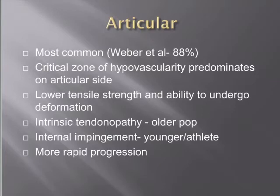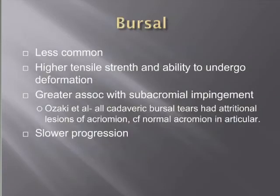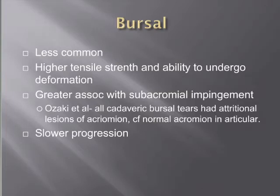Articular-sided tears are related to intrinsic tendinopathy — hypovascularity and age-related degeneration — but are also seen in the internal impingement phenomenon. They have a more rapid progression and are less likely to resolve spontaneously or respond to conservative management compared to bursal-sided tears. Bursal-sided tears are less common; the bursal side has higher tensile strength and better ability to undergo deformation. Ozaki et al. in a cadaveric study found all cadaveric bursal tears had some inciting acromion lesion, whereas those with articular-sided tears all had normal acromial morphology without degeneration or spur formation.